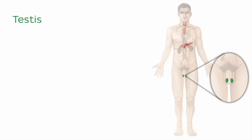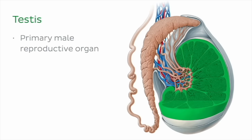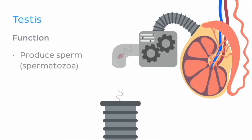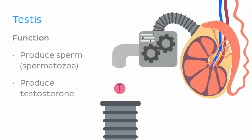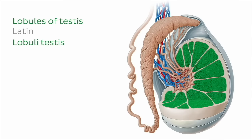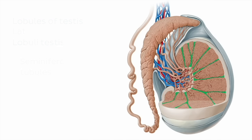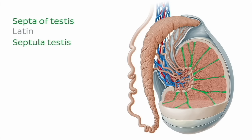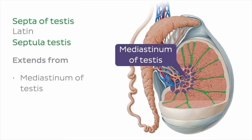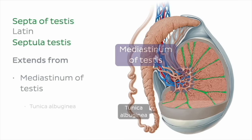The testes, singularly known as a testis, are the primary male reproductive organs. These two oval-shaped structures reside in the scrotum and are responsible for the production of sperm and testosterone. The testes contain lobules that are primarily composed of seminiferous tubules, separated by fibrous interlobular septa. Each septum extends from the mediastinum of the testes to the innermost layer of the external covering of the testes.